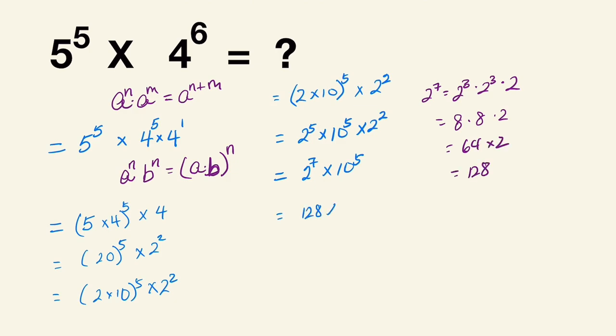So this is 128 times 10 to the 5. That's equal to 128 with five zeros. That's 12,800,000, or 1.28 times 10 raised to the 7. And this is our answer.